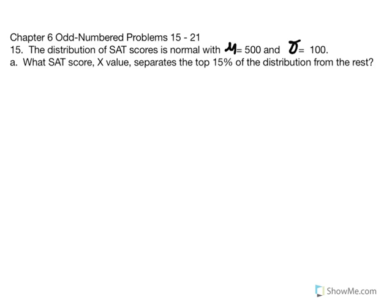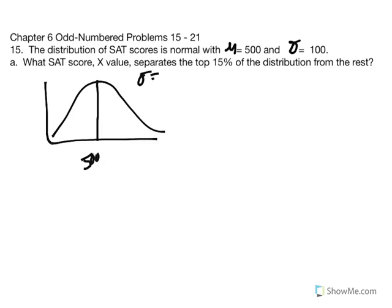Problem 15. A distribution of SAT scores is normal with a mean of 500 and a standard deviation of 100. What SAT score — the X value — separates the top 15% of the distribution from the rest? Let's sketch this out given the values identified. We know the mean is 500, the standard deviation is 100, and we want to find the X value that separates the top 15%, which is the tail of the distribution.